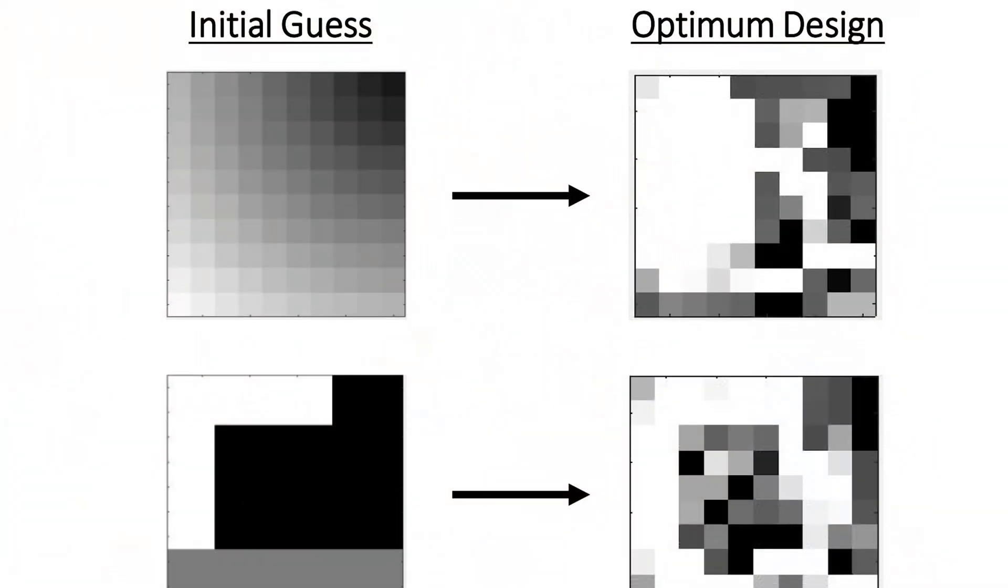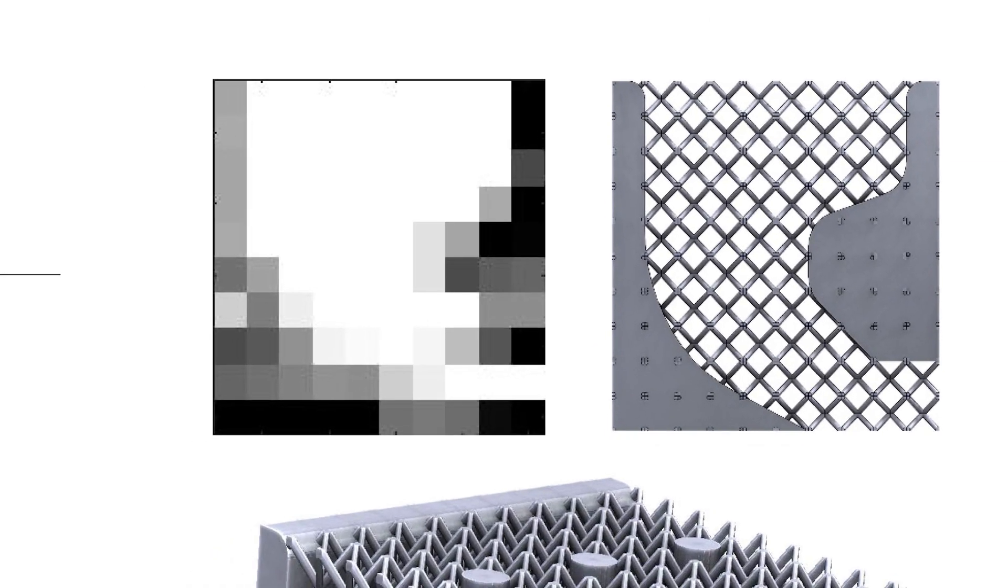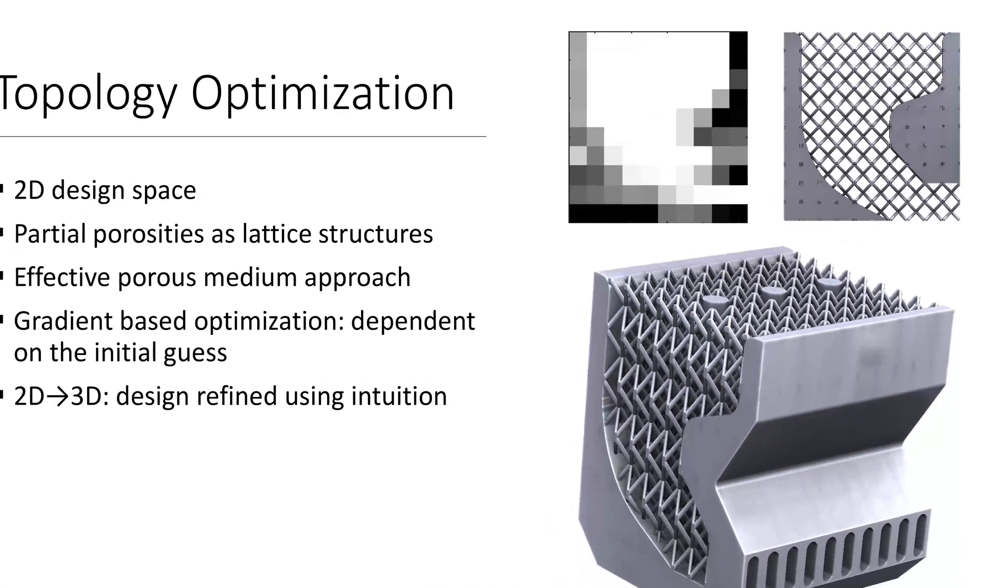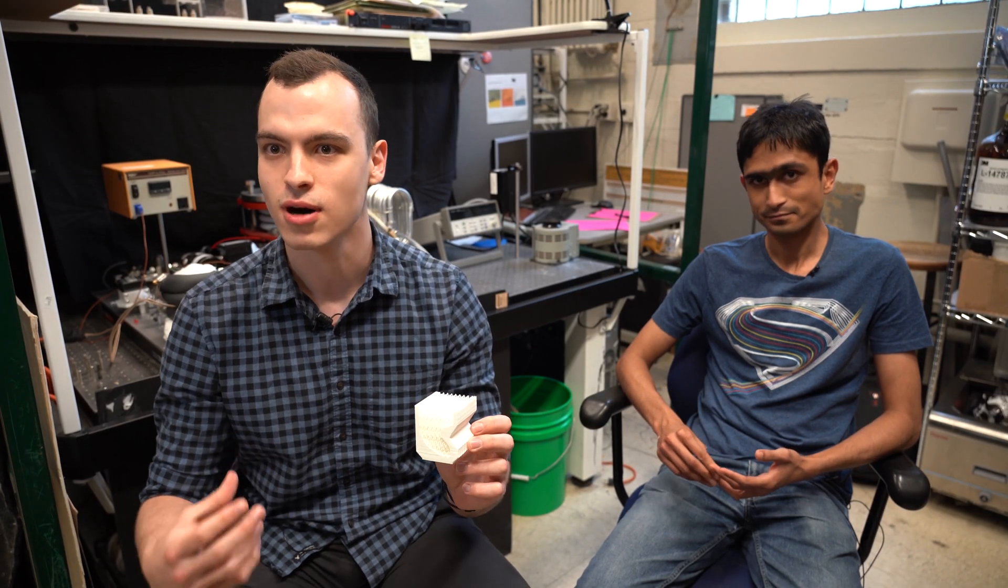We use topology optimization. We tweak the distribution at one particular point to see how much our thermal resistance will improve. So we tweak it to a certain value and then keep doing this until we cannot have any more improvement. Here we have a prototype of the final design that we came up with using topology optimization.